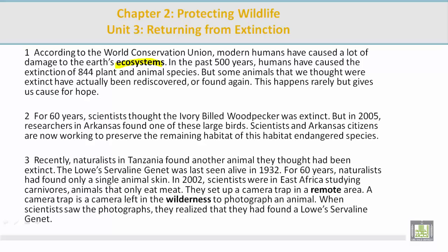Paragraph 3. Recently, naturalists in Tanzania found another animal that they thought had been extinct. The Lowe's Cerviline Genet was last seen alive in 1932. For 60 years, naturalists had found only a single animal skin. In 2002, scientists were in East Africa studying carnivores — animals that only eat meat. They set up a camera trap in a remote area. A camera trap is a camera left in the wilderness to photograph an animal. When scientists saw the photographs, they realized that they had found a Lowe's Cerviline Genet.